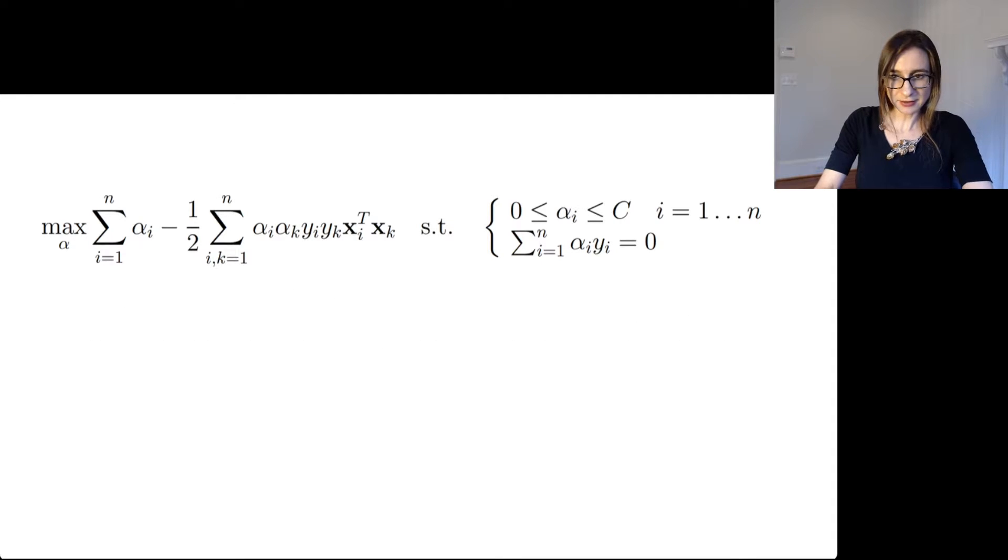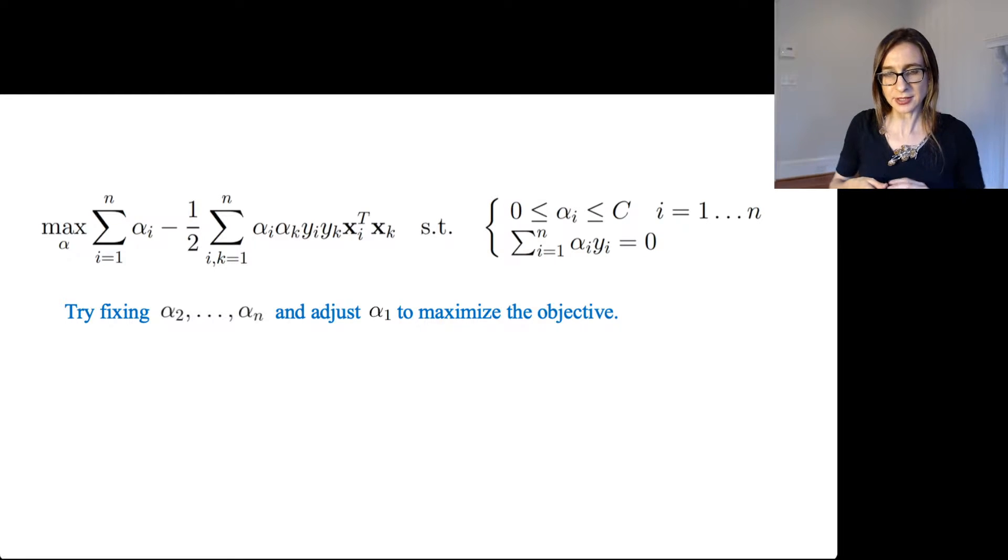So I put up here the dual problem from the non-separable SVM, and to do coordinate ascent what we would normally do is adjust one alpha at a time to try to maximize the objective. So you'd fix all of the other alphas and you pick one of them you're going to maximize the objective. Then you do that and then you pick a different alpha and you try to maximize the objective, and then you keep iterating through and try to keep making that objective larger and larger until there's nowhere else to go.